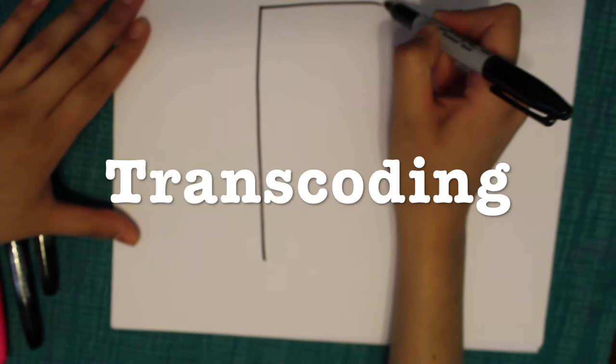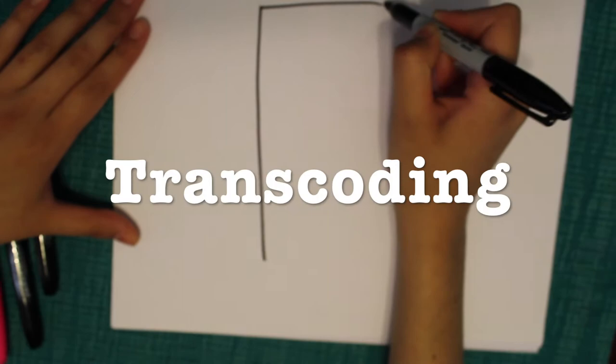New media objects can be transcoded into different formats. For this example, we have newspapers versus apps that do the same thing, but the apps are used more commonly today.